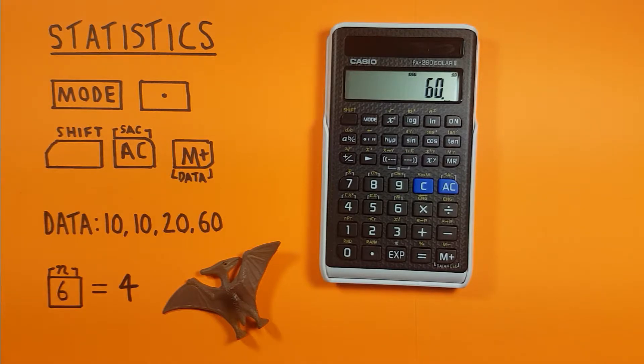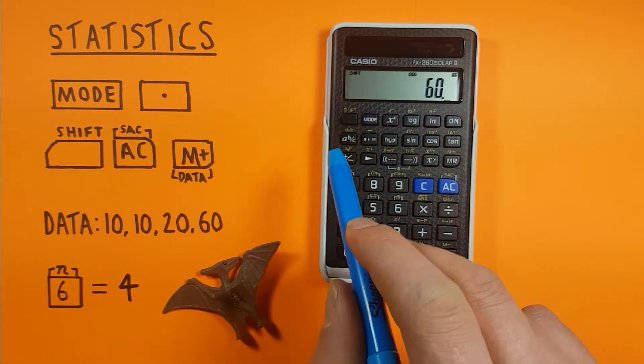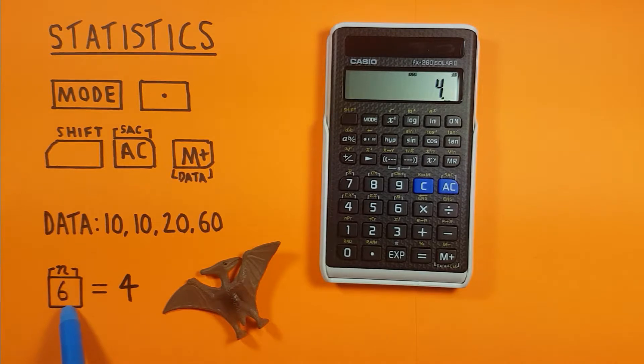We can check this by pressing shift 6, which has the N above it, and this tells us how big our data set is. Right now we have a data set of 4.